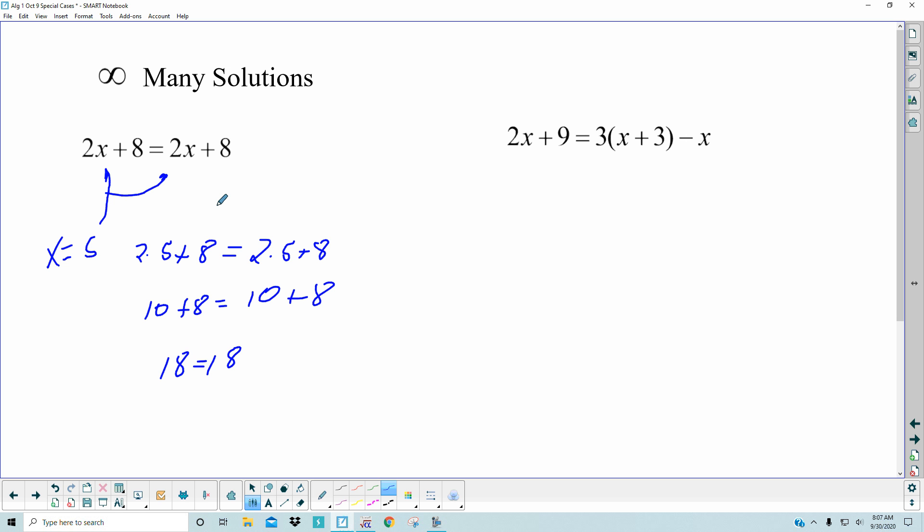It wouldn't matter what number I picked. If I picked negative 5 and filled it in, so there'd be negative 5 and a negative 5. So that would be negative 10 and negative 10. So then you'd have negative 2 is equal to negative 2. Your answer completely depends on what number you're filling in. But what I'm saying is, no matter what number you pick for x, you're going to get an equality. You're going to get a true statement. So there are infinitely many answers. All numbers work.